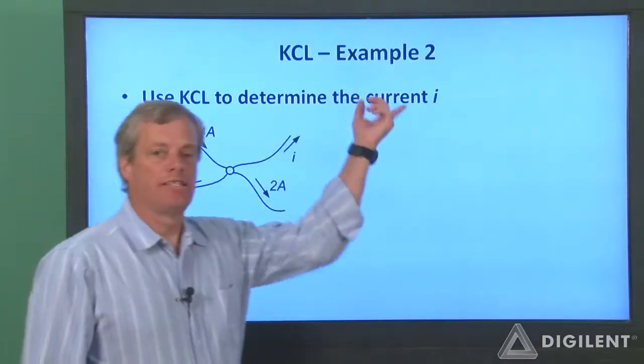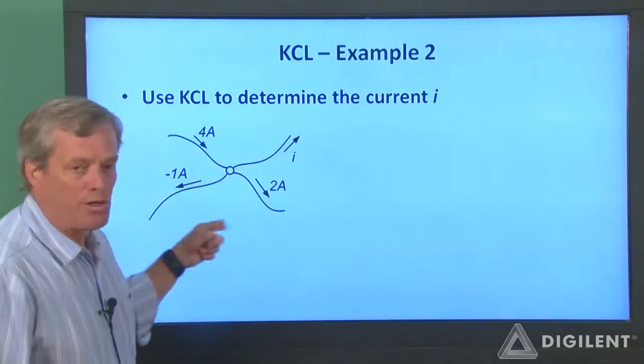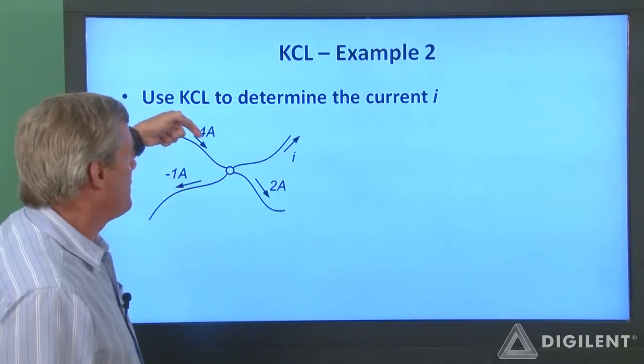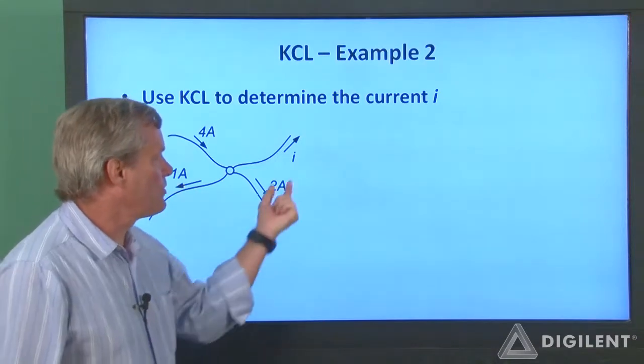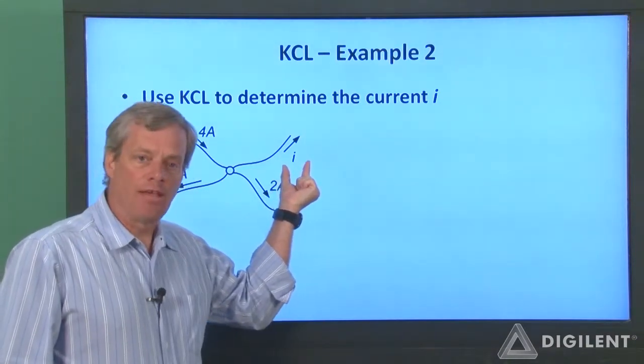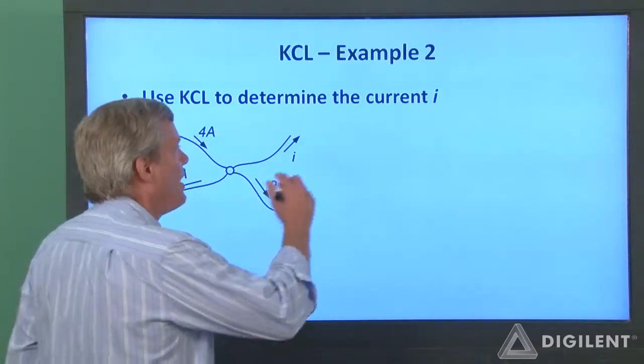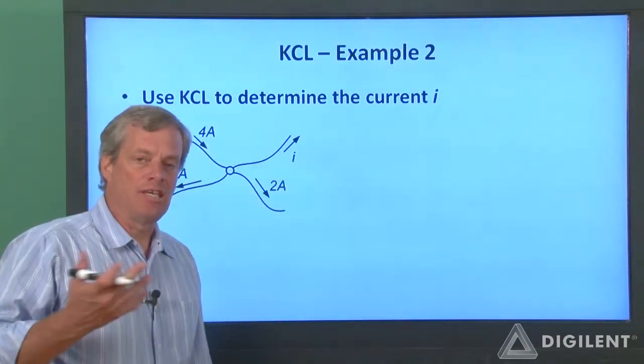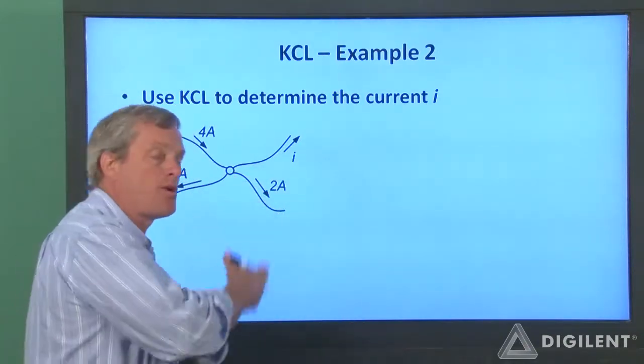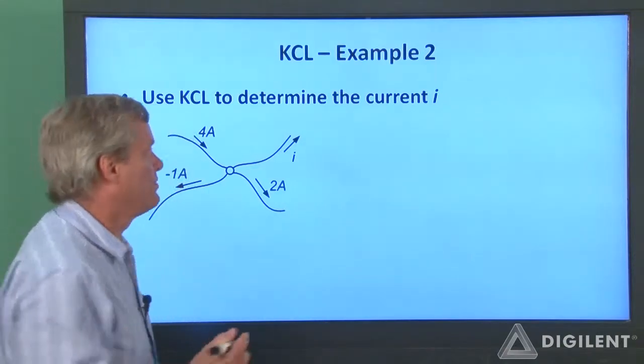Here's our second example. We have a node with four currents. We're given the magnitude and direction of three of those currents. We're going to apply KCL to find the fourth current. Now we need to assume whether we want to treat positive currents as entering or leaving the node. I'll do this problem both ways just to make sure we know what's going on.